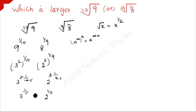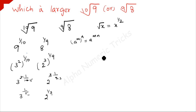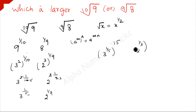Now, to compare these, we raise both sides to the power 15, since the LCM of 5 and 3 is 15. So we compare (3^(1/5))^15 and (2^(1/3))^15.